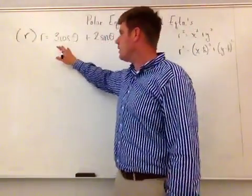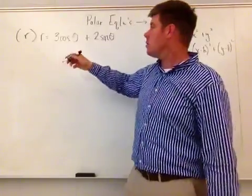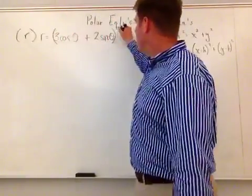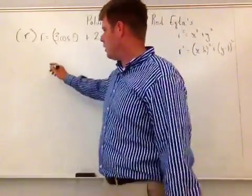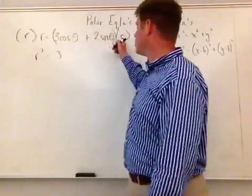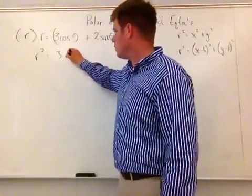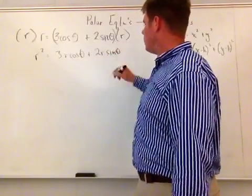And over here, I'm going to take this entire side and multiply it by r. But now remember that I've got a quantity here. So I'm going to take that entire quantity and multiply it by r. So what I create over here is r squared. It's equivalent to 3, so now I'm just going to distribute this through. So 3r cosine theta plus 2r sine theta.